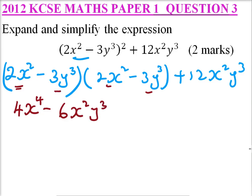The same here. Minus 3y cubed multiplied by 2x squared. It will give you minus 6x squared y cubed plus. So this is minus 3y cubed multiplied by minus 3y cubed. That will become positive 9y to power 6.